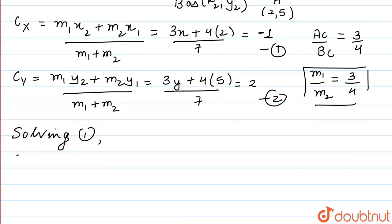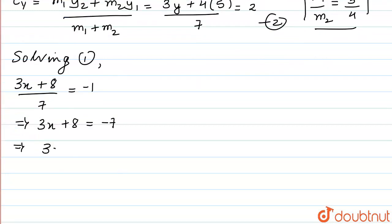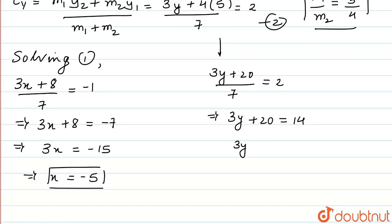Solving equation 1, I can state that (3x + 8) upon 7 is equal to -1. This implies 3x + 8 is equal to -7. Now, we can solve this second equation and can write (3y + 4 times 5 that is 20) upon 7 is equal to 2. This implies that 3y + 20 is equal to 14, or 3y is equal to 14 minus 20 which is -6. And finally, y is equal to -6 upon 3 which is -2.